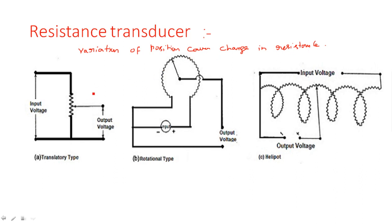All three types are essentially potentiometers. In the translatory type, a complete input voltage is applied across the potentiometer, and the output voltage is taken from ground and from the wiper. The wiper is connected at different positions along the resistance. Translatory means linear movement — the wiper moves either upward or downward, and displacement of this wiper causes different amounts of resistance to be selected.